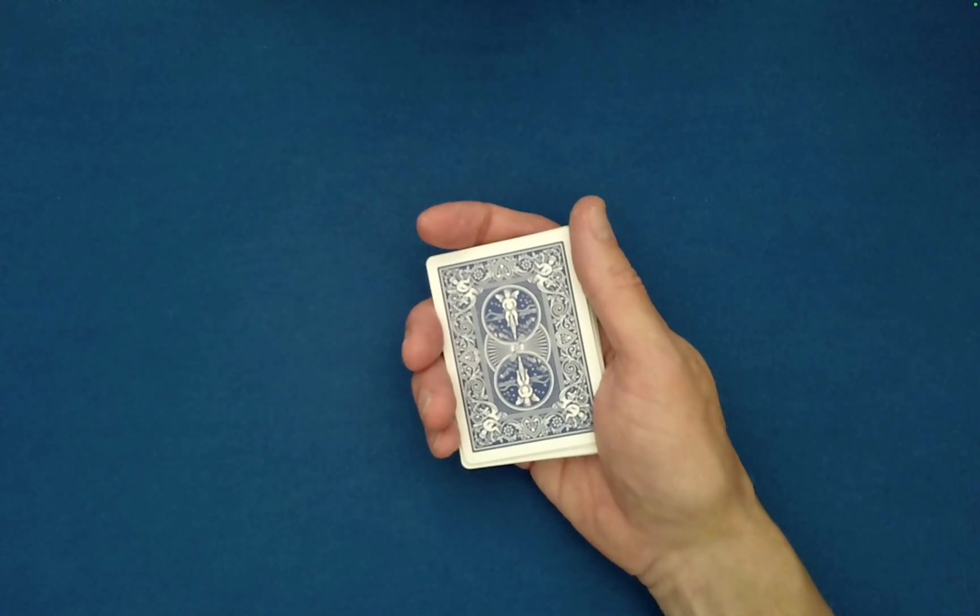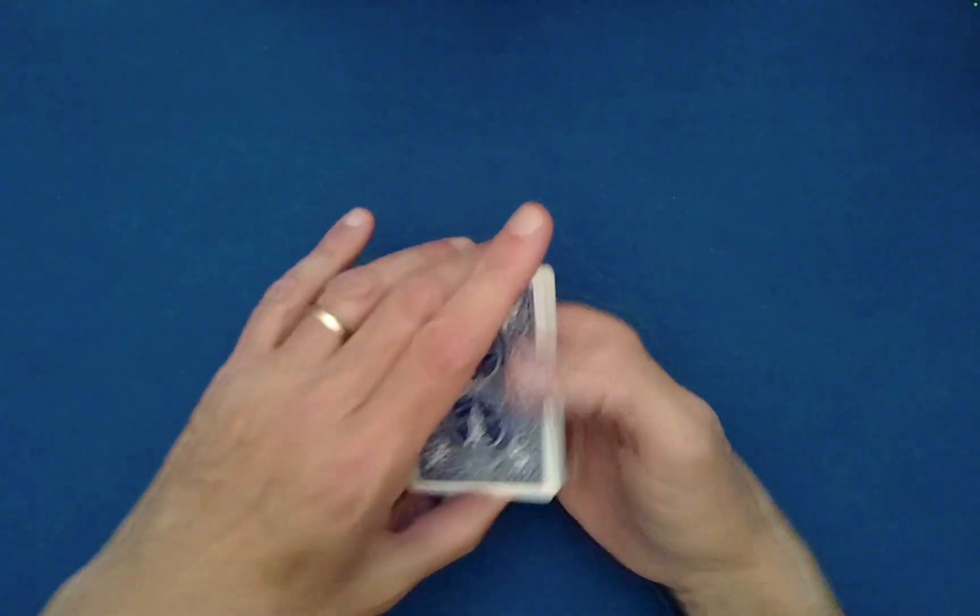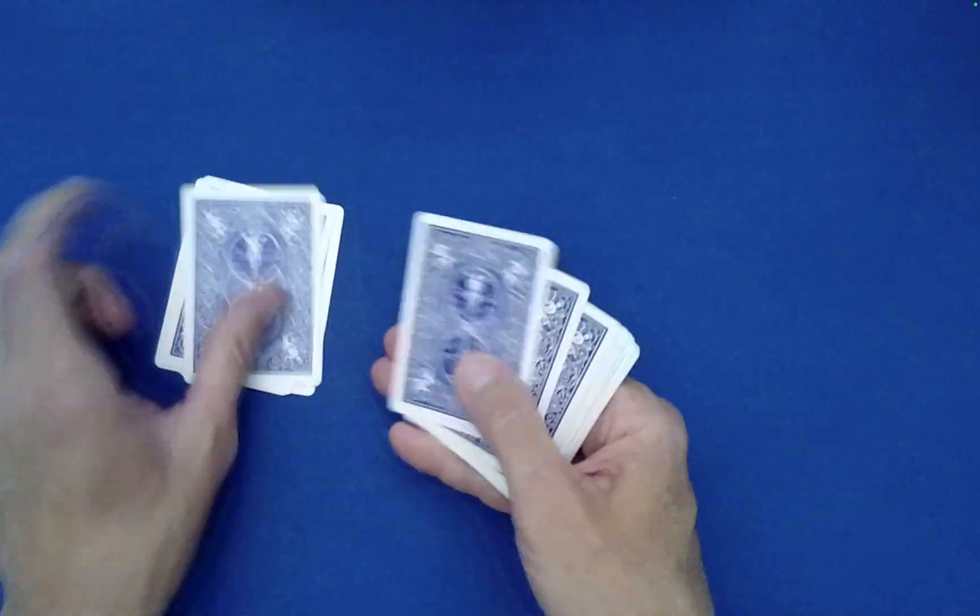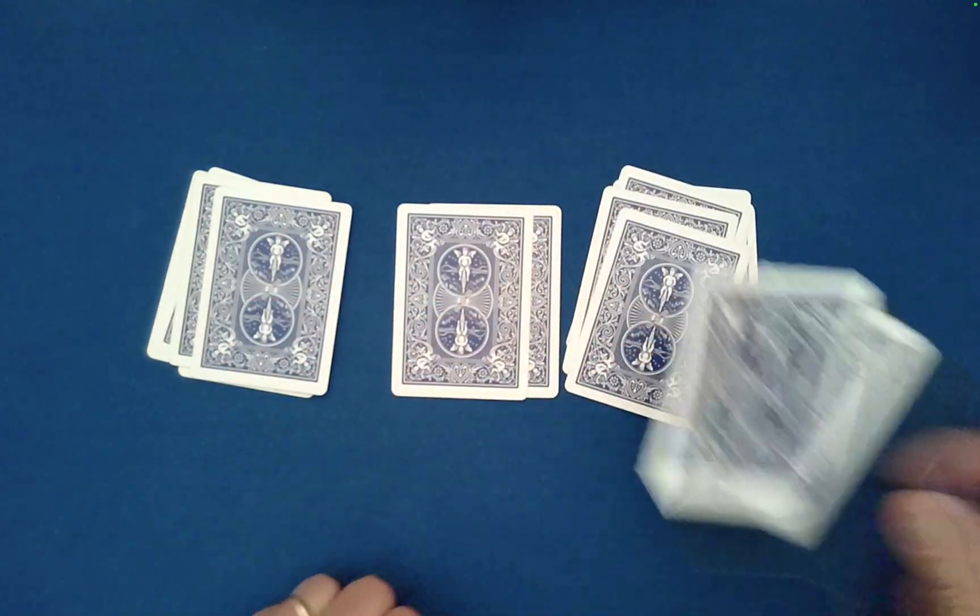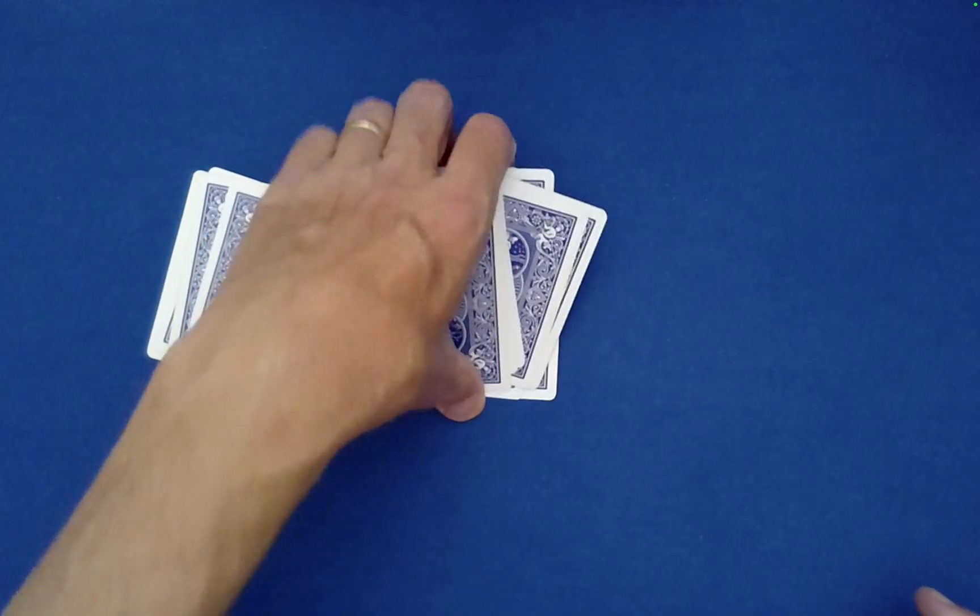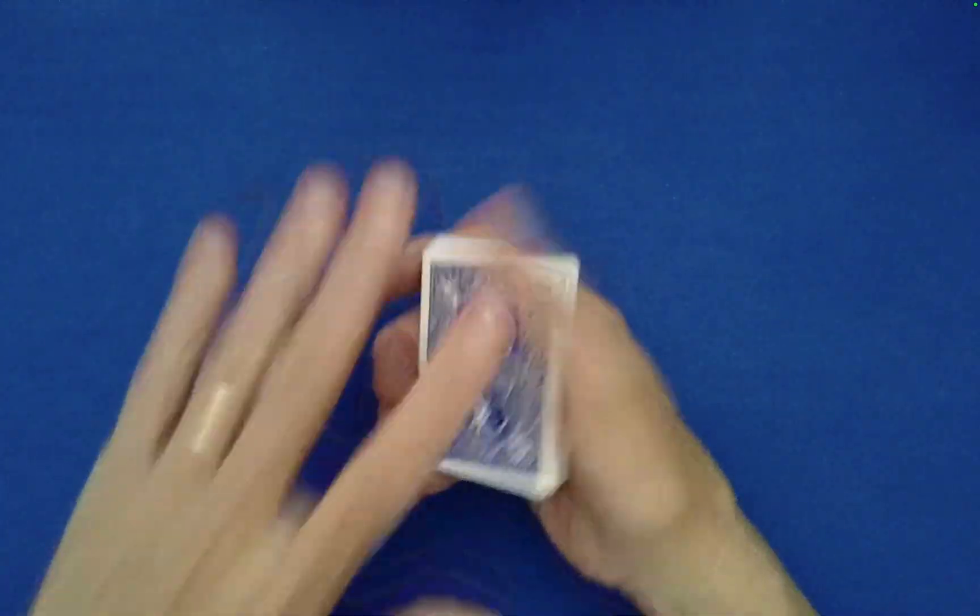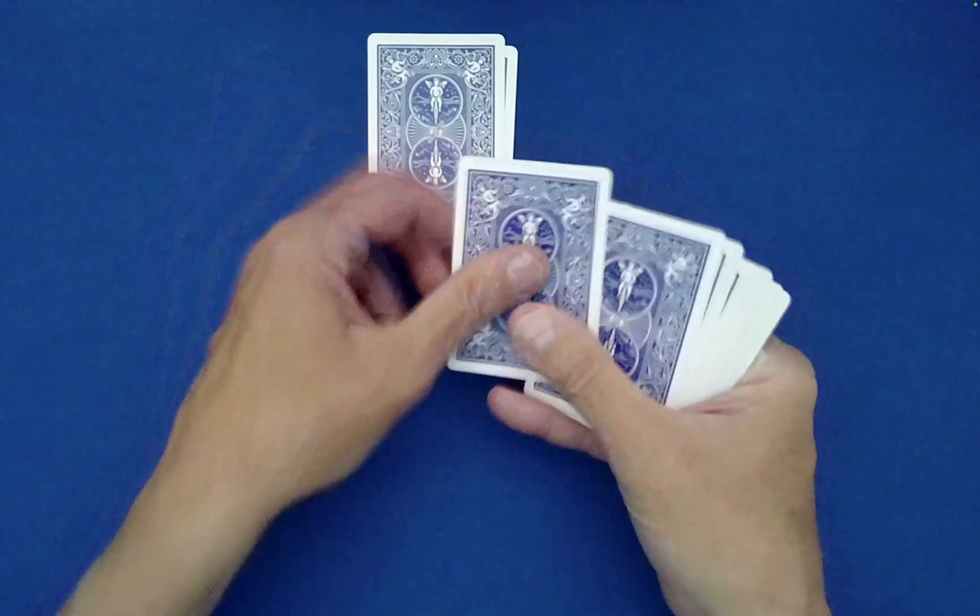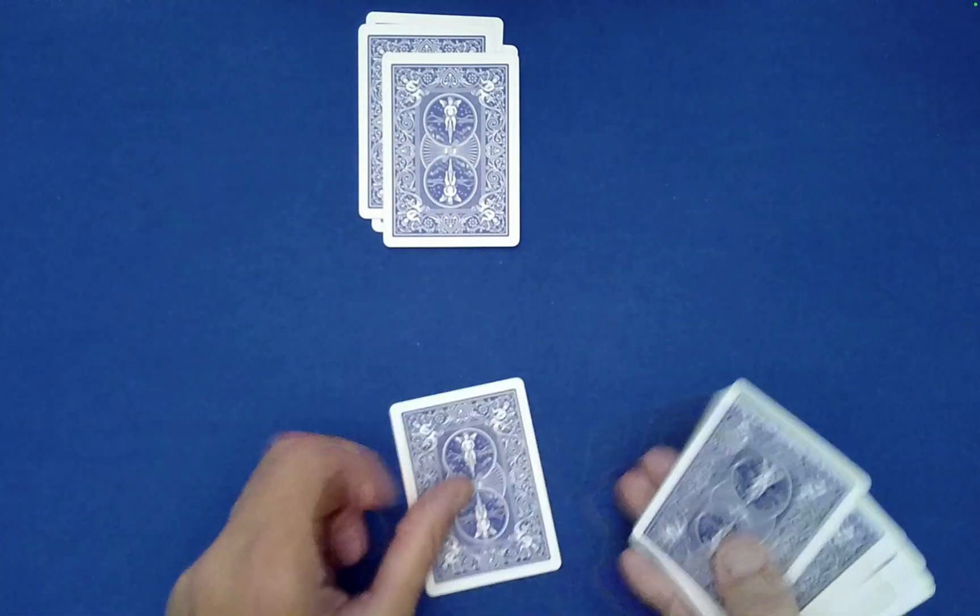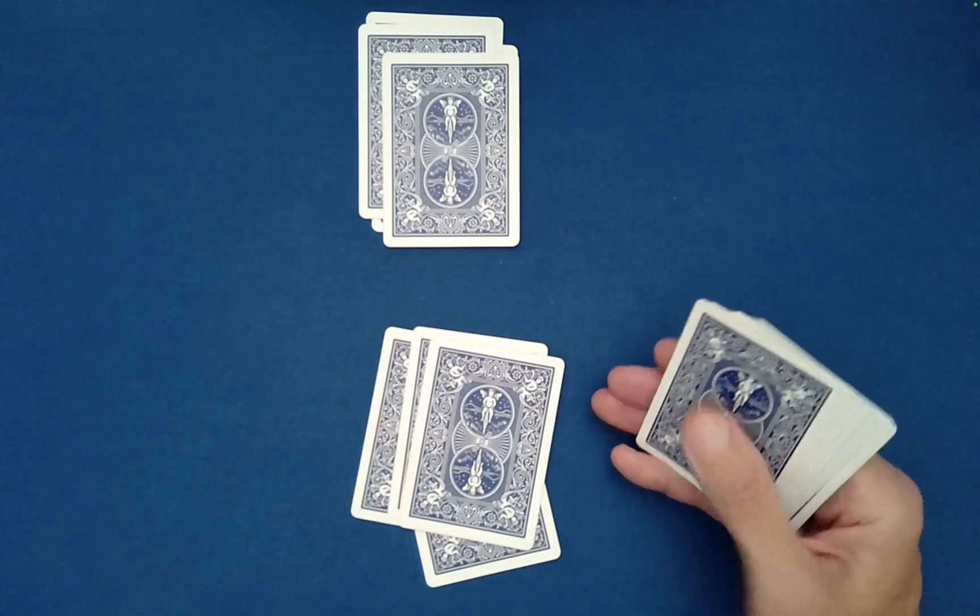So T-H-R-E-E-O-F-C-L-U-B-S, right, three of clubs. I want to just confirm that, yep that's what you claim it is. Okay so I'm going to spell out your Y-O-U-R card C-A-R-D is I-S the T-H-E.